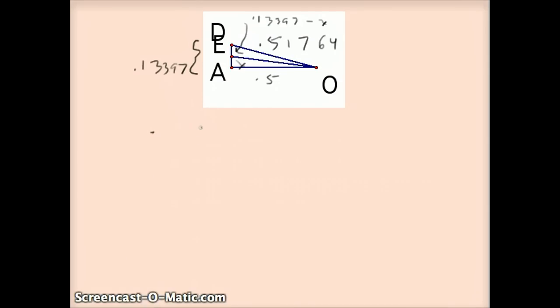OD over AO, that's 0.51764 over 0.5, equals ED over EA. Well, ED is 0.13397 minus X. And AE is what I'm trying to calculate, which is X.